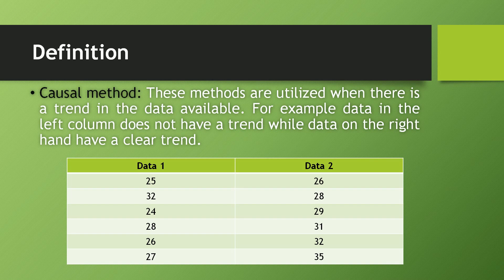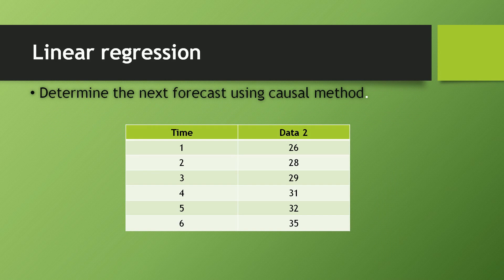So first we will solve the linear regression method. Now let us solve a question in order to understand this method. Determine the net forecast using causal method. Data is for time 1 it is 26, time 2 which is 28, then 29, 31, 32, 35. So you can clearly observe the data is increasing. So let me first draw this data.